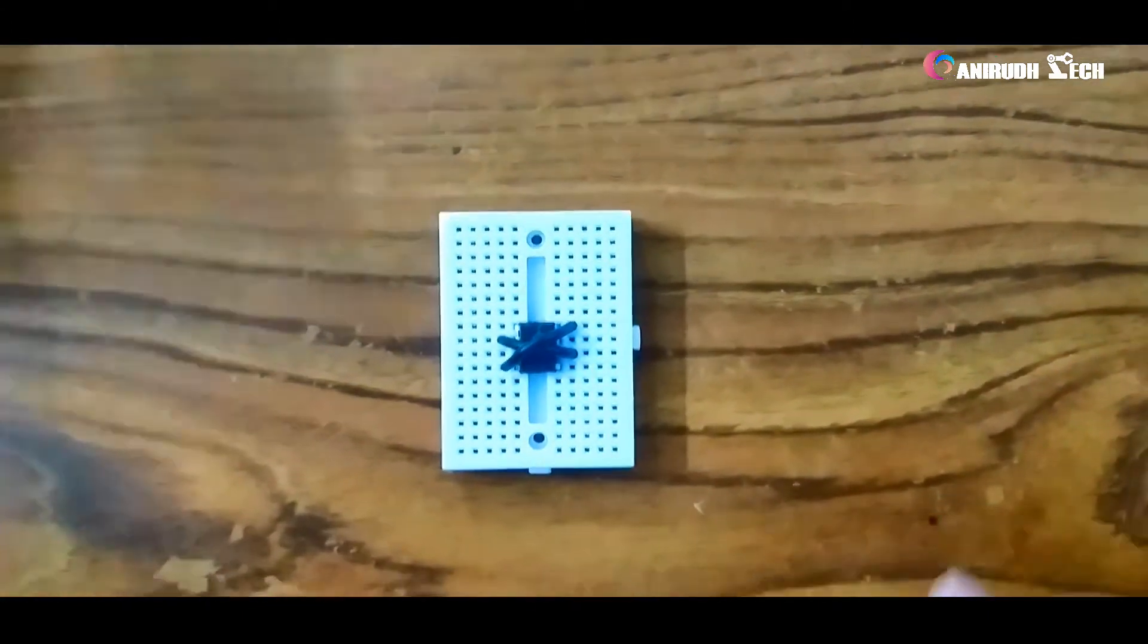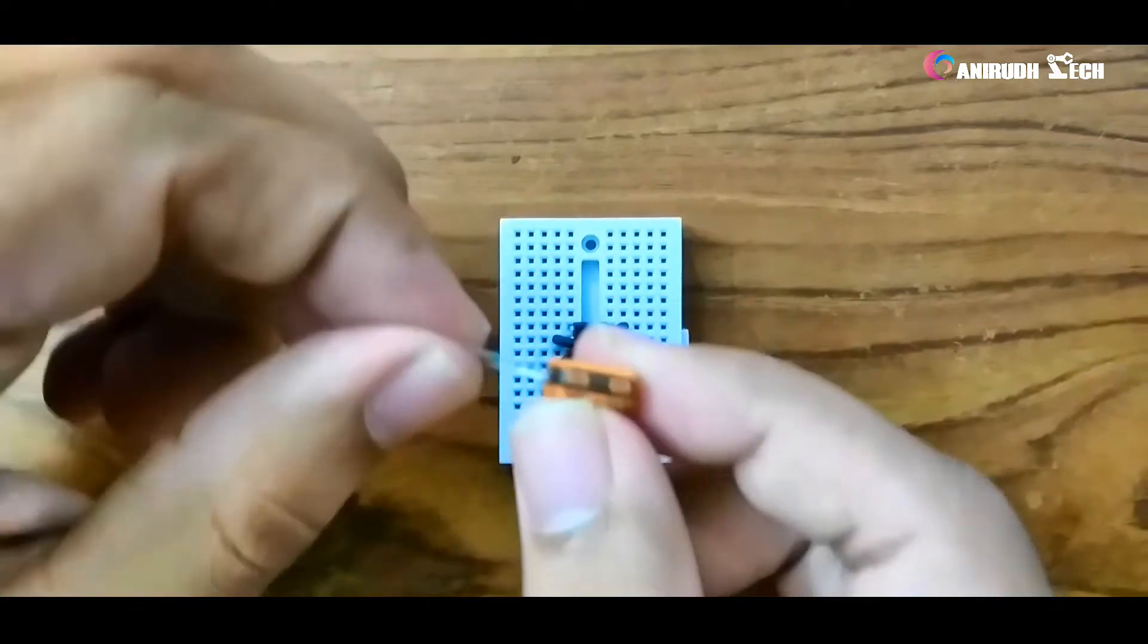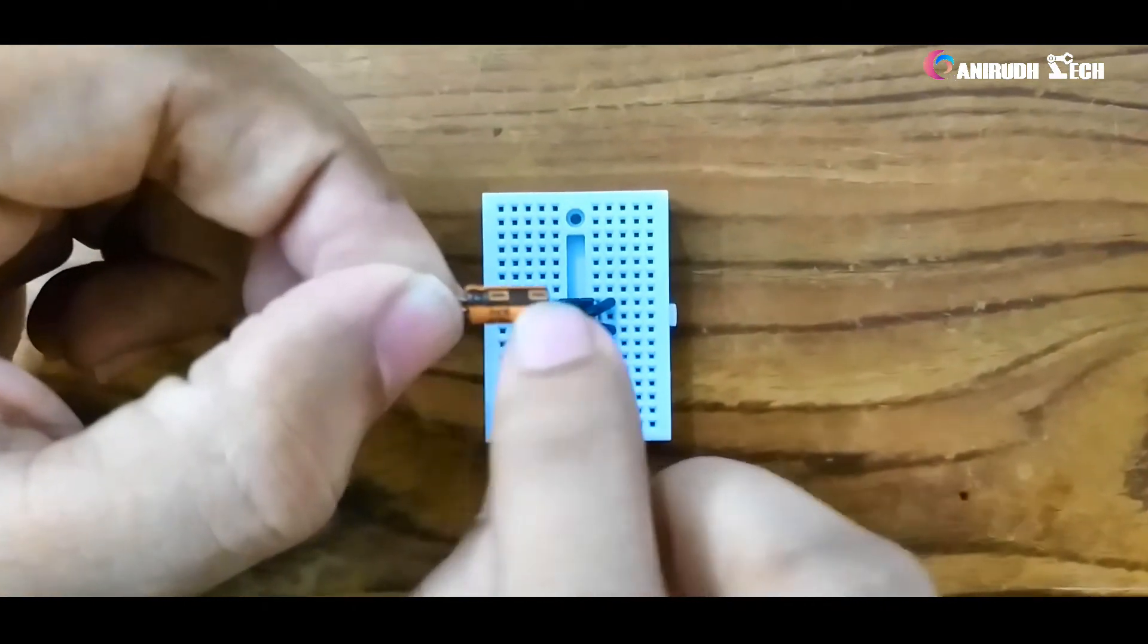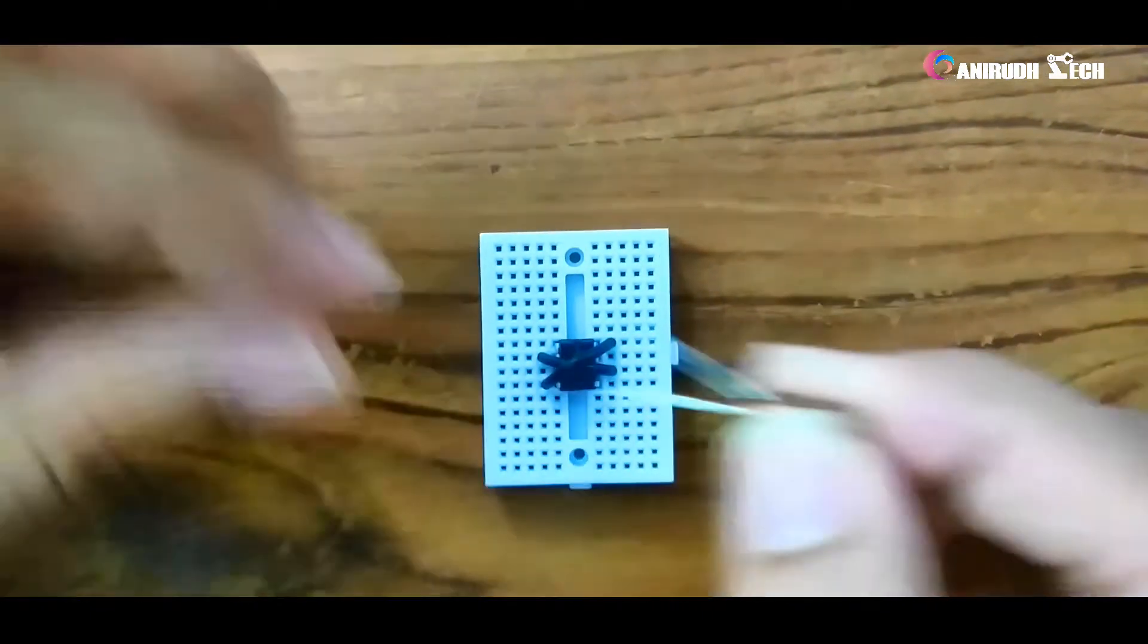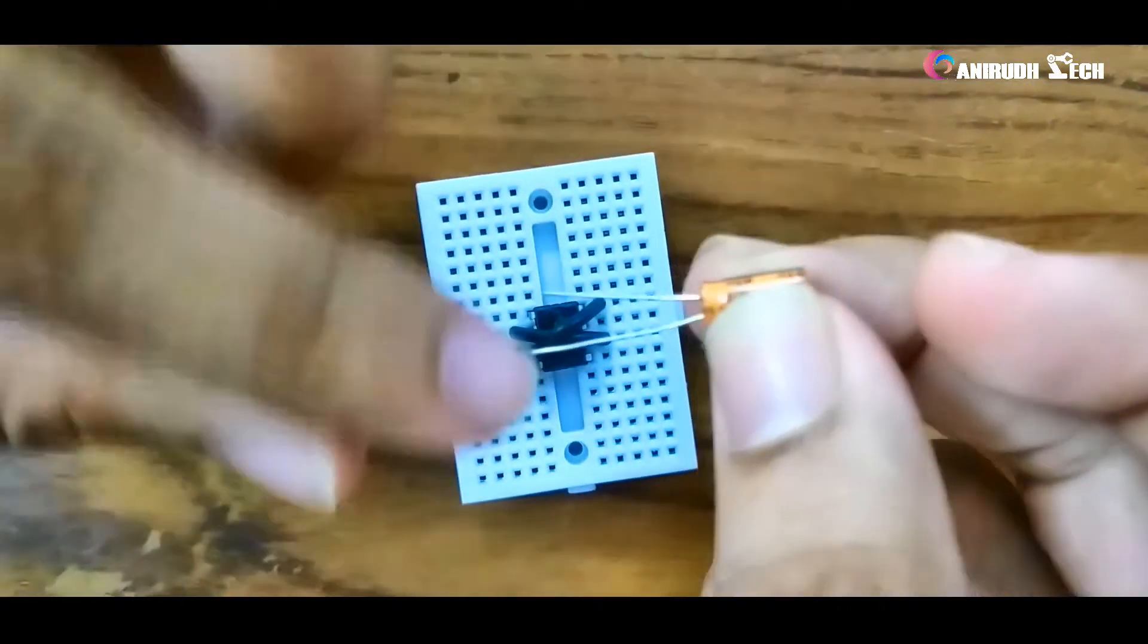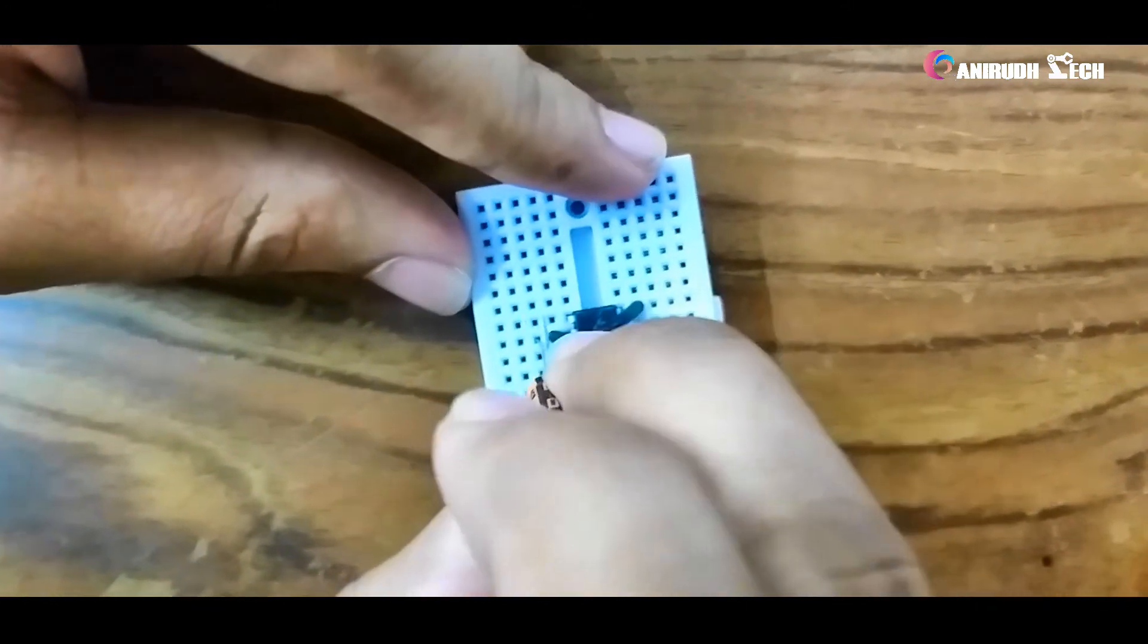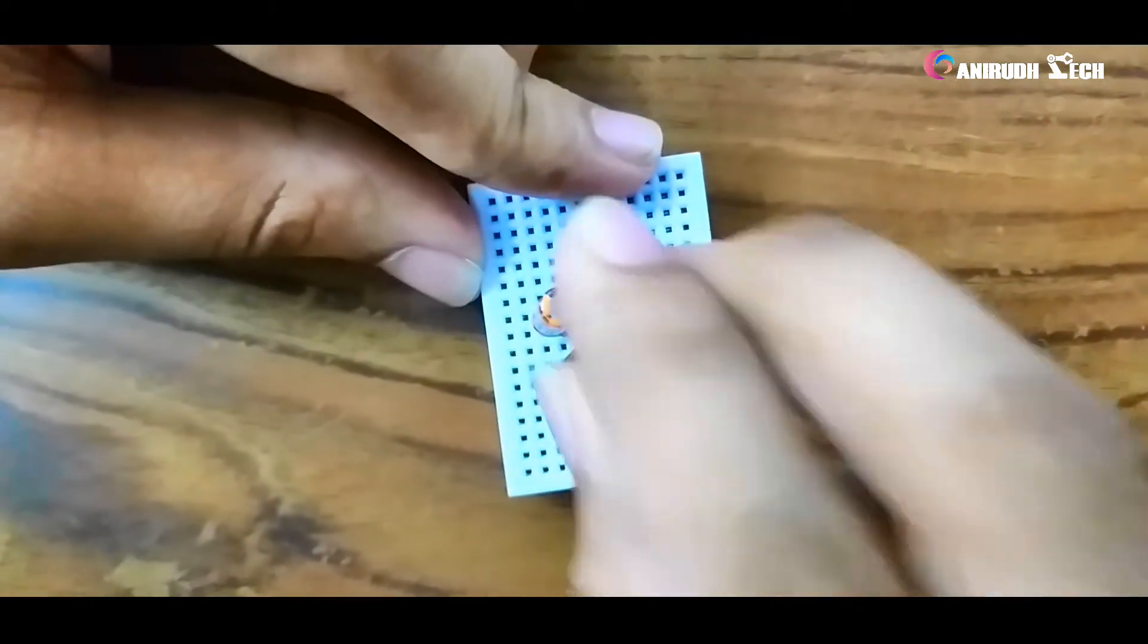Now the capacitor. You can see here this black bar, this is the negative side, and this is positive. It's a polarized capacitor, so the negative side goes to pin number one and the positive side goes to pin number two. We can place it here like this.